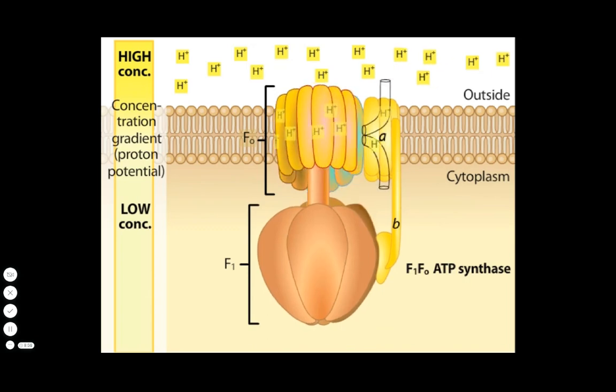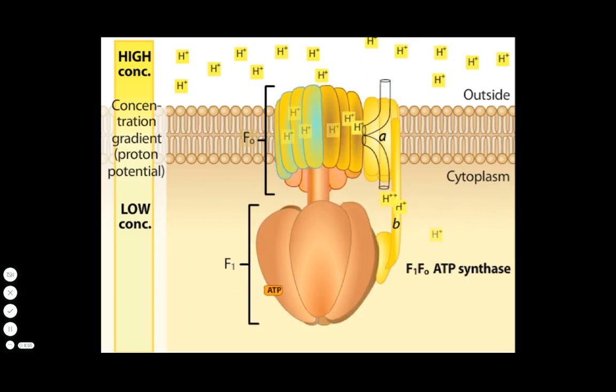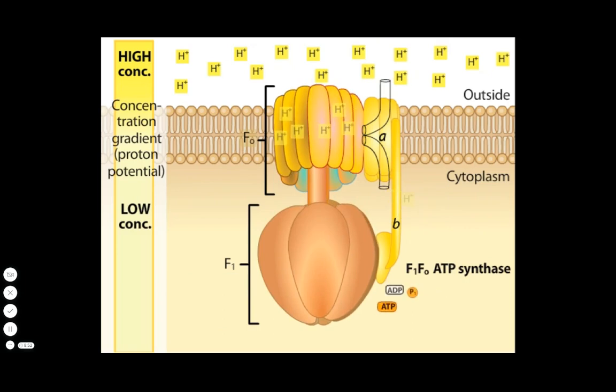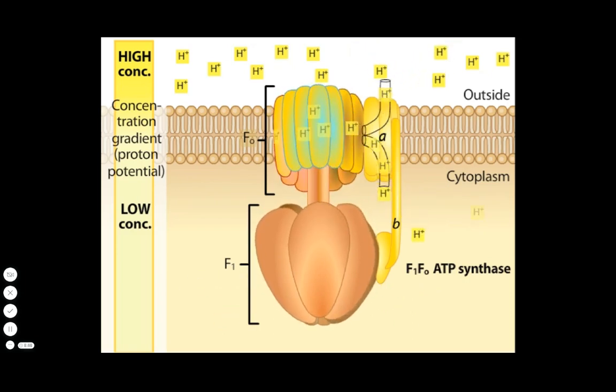Protons enter through a channel in subunit A and move into the C subunits, causing F0 to rotate in 120 degree steps around the axle. Protons are released from the C subunits into the cytoplasm.